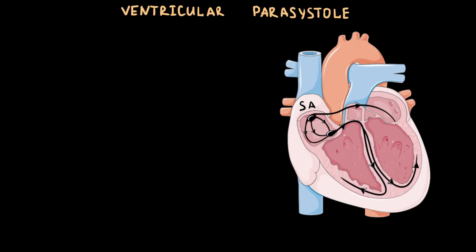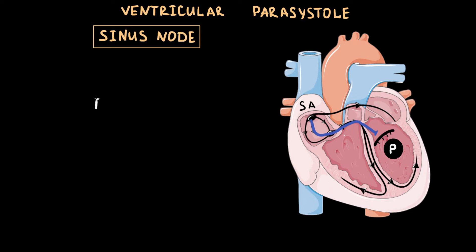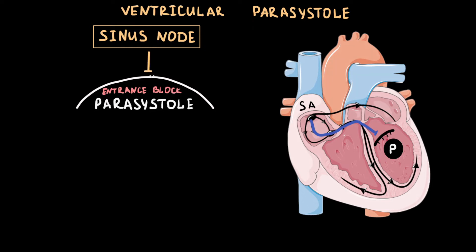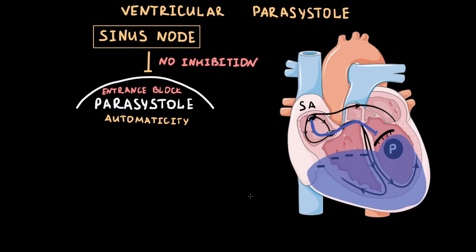The key feature of parasystole is that it has protection from sinus node inhibition, called entrance block. This means that the impulse from the sinus node cannot reach the parasystolic focus because of an obstacle, so the sinus node cannot inhibit the ectopic activity of parasystole as it does with other subsidiary pacemakers. As a result, parasystolic activation of the ventricle leads to premature ventricular contractions with a regular, slower-than-sinus-node rate, and on ECG we see monomorphic premature ventricular contractions.